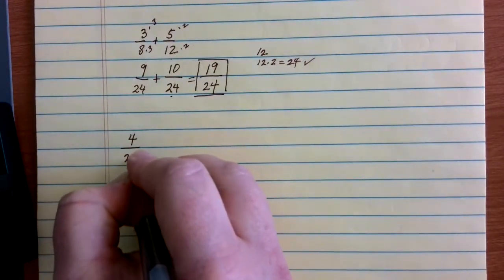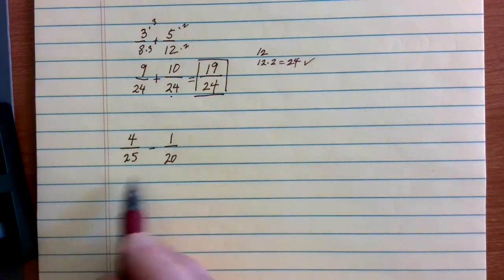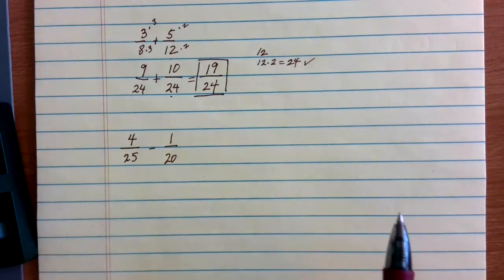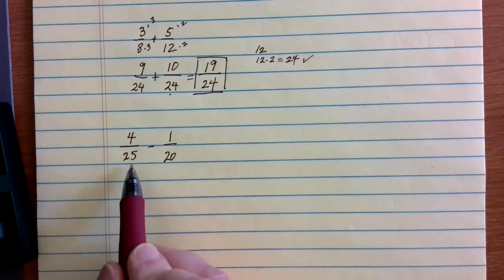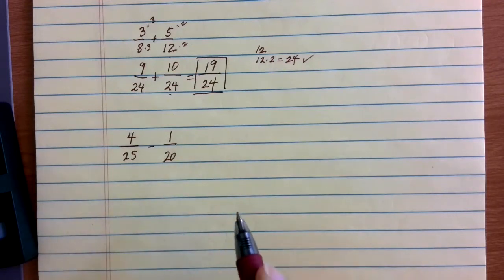Let's suppose that we have 4/25 and we want to subtract 1/20. Again, adding and subtracting fractions require a common denominator. We do not have that, so what do we do? Let's figure out what a common denominator might be. You want to think of something that 25 will go into evenly and that also 20 will go into evenly.